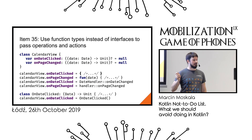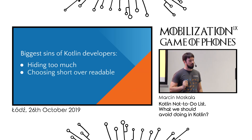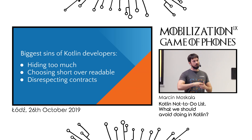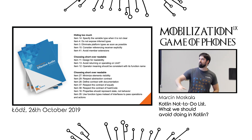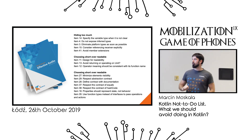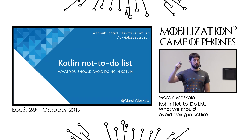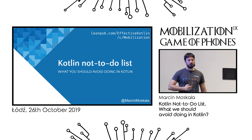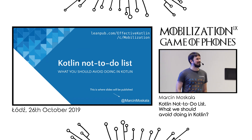That's everything for today. Three big sins of Kotlin developers: one, hiding too much; two, choosing short over readable; three, disrespecting contracts. There is much more to say, but we have limited time — much more is included in my book Effective Kotlin, available at leanpub.com/effectivekotlin with a discount at slash c slash mobilization. The presentation will be posted on my Twitter. Thank you for your attention — have a happy Kotlin!